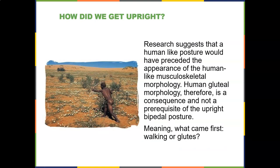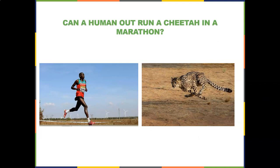Interesting research: many thought development of the glutes caused upright posture, but research suggests a human-like posture would have preceded the appearance of human-like gluteal morphology. Therefore, the gluteal morphology is a consequence — not a prerequisite — of upright bipedal posture. In other words, we started walking and then the glutes developed, not the other way around.